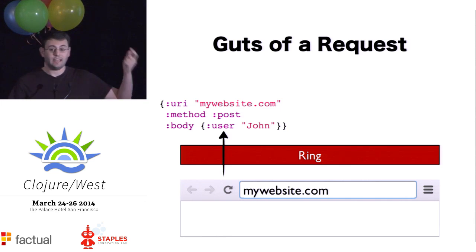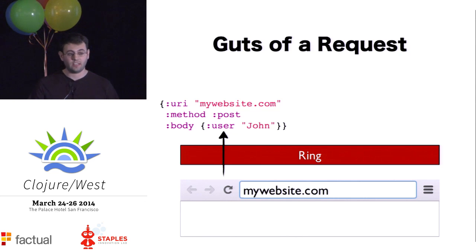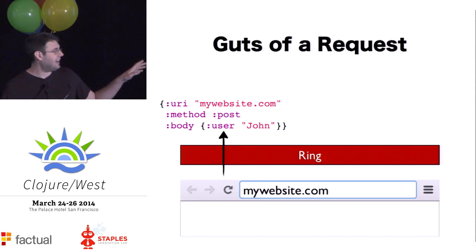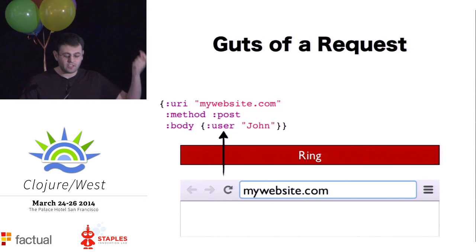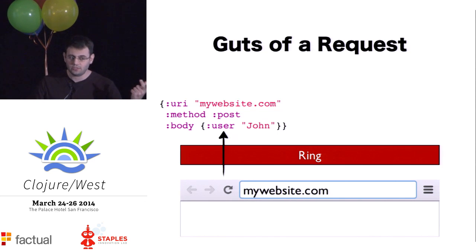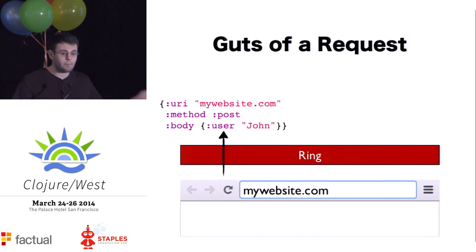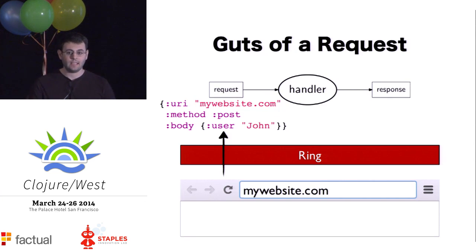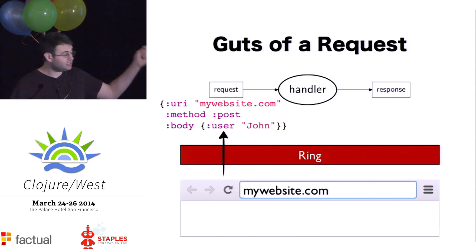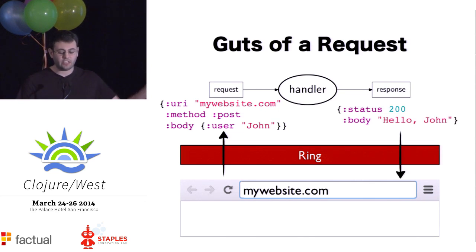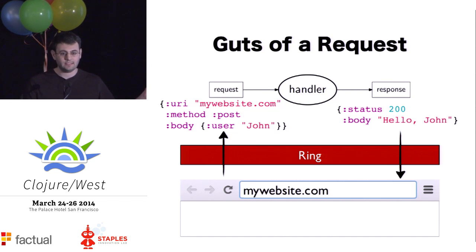There can be nested maps within it that also have keyword keys. In this particular case, the map has a body key, and then under the body there's another map with the user key, and the user maps to a value which is the name of our user. Next, this request gets passed up to a handler, and a handler really is just a function from request to response. So the handler takes this request as input and generates a response as output. The response is also another one of these maps with keyword keys and it gets sent back down to the client.